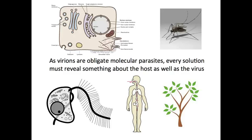Because viruses are obligate intracellular parasites, they have to get into a cell in order to multiply. If a virus doesn't get inside the cell, nothing will happen. So whenever we study viruses, we learn not just about the virus but the host as well — mosquito hosts, protists, humans, and plants. Many discoveries in biology have been revealed by using viruses to probe hosts. Very basic things like splicing: splicing of genes was discovered in virus-infected cells. So when you study viruses, you're not just studying the virion — you're studying the infected cell.